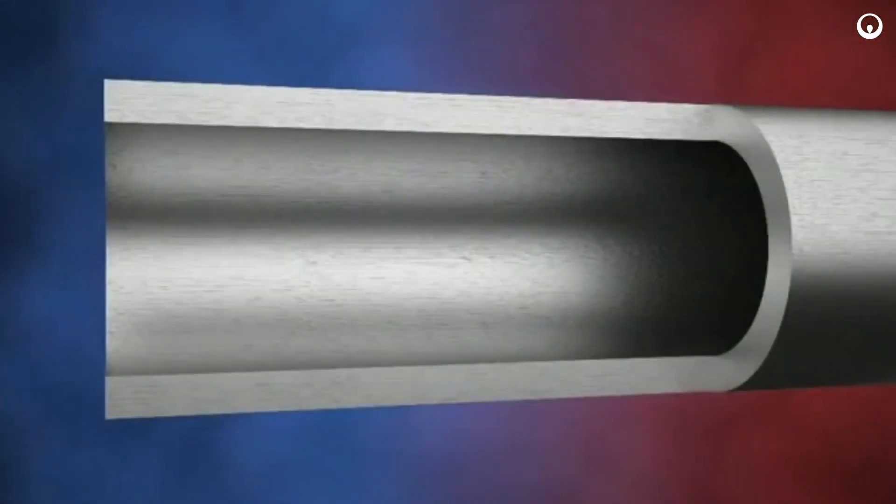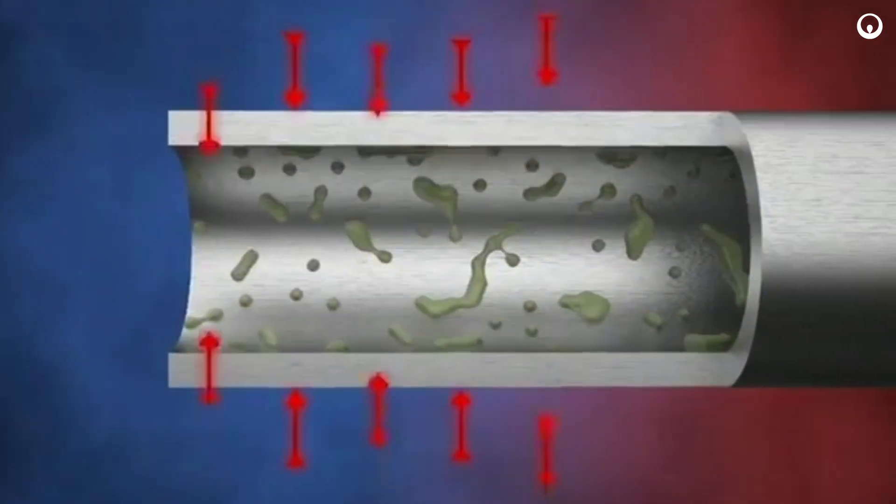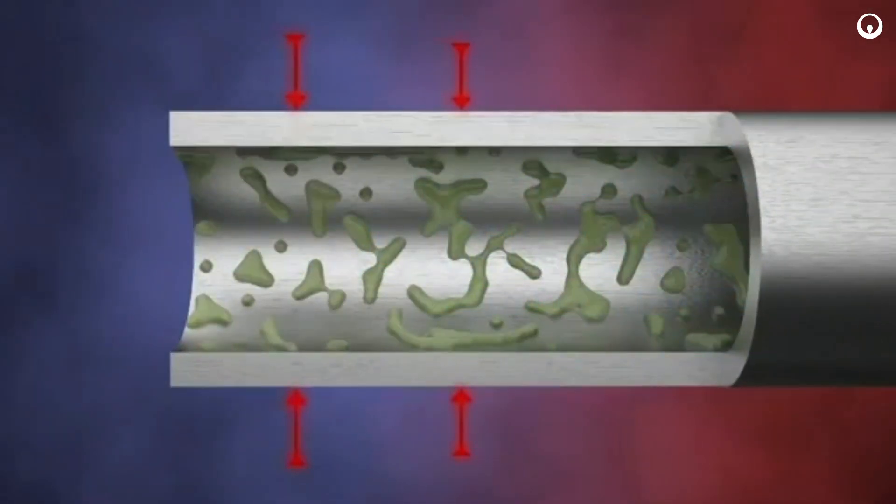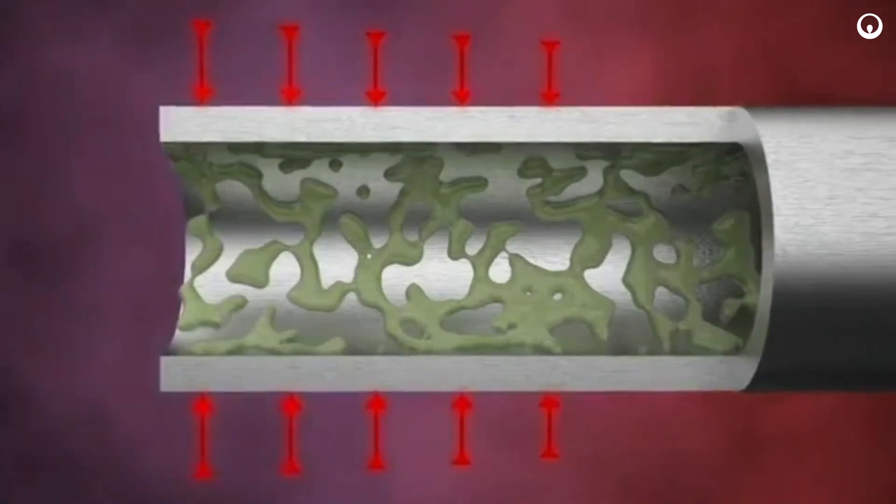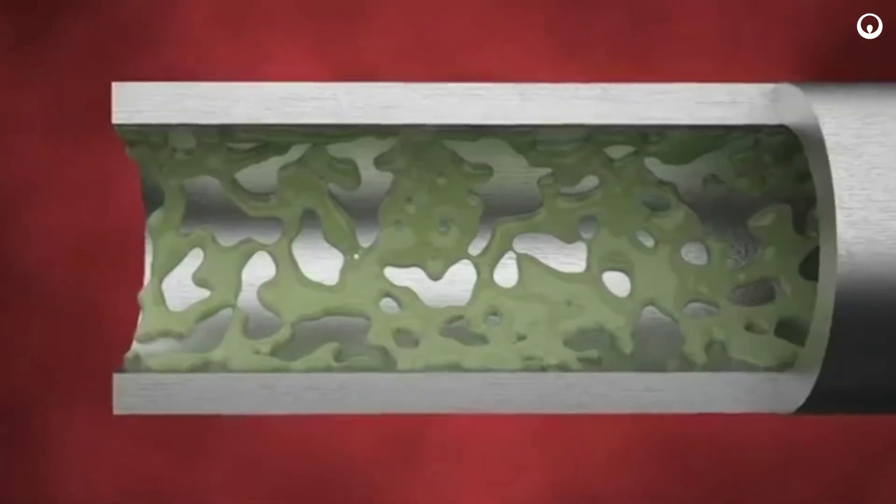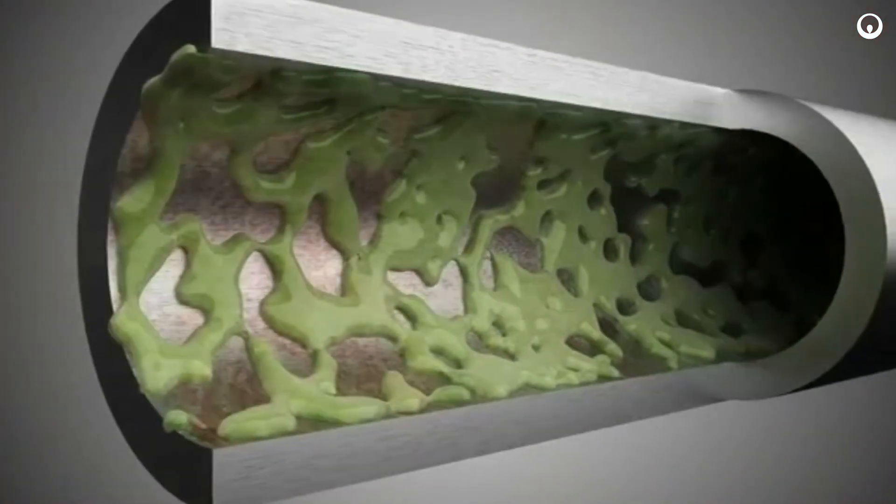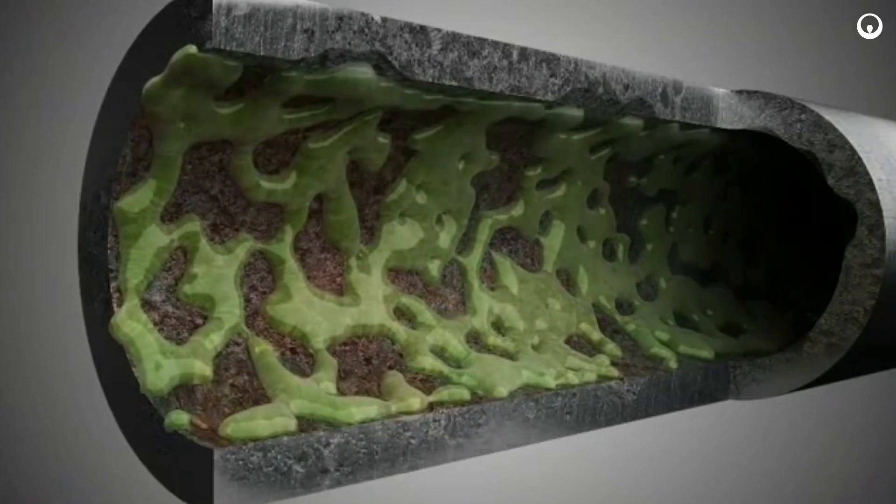When biofilms grow to fouling levels, they reduce cooling efficiency and process throughput. Reduced cooling efficiency due to biofouling can lead to higher energy costs or force unscheduled outages for cleaning. Over time, biofilms also cause equipment damage due to corrosion, which can increase maintenance and replacement costs.